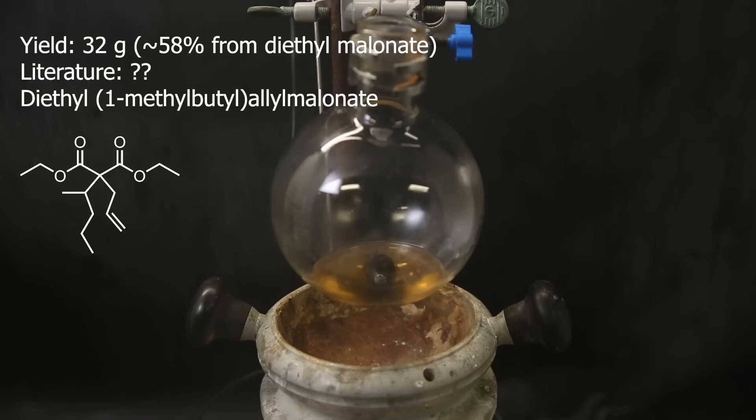In the end, I am left with 32 grams of what is mostly the product, diethyl 1-methylbutyl allyl malonate, giving an overall yield of about 58%, including impurities. And I can just use it like this for the next reaction.